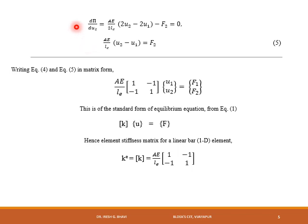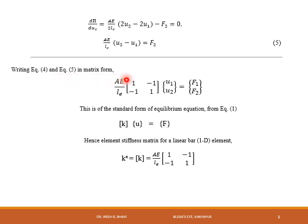Differentiating π with respect to u2 and setting equal to zero: (Ae/2Le)·(2u2 − 2u1) − F2 = 0, giving (Ae/Le)·(u2 − u1) = F2. Writing equations 4 and 5 in matrix form, with Ae/Le as a common factor, we get the matrix system with coefficient matrix [1, −1; −1, 1].